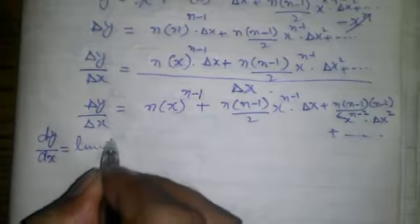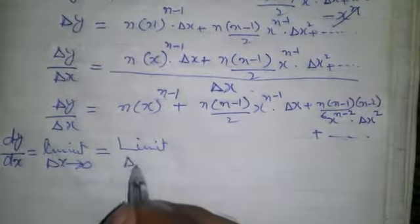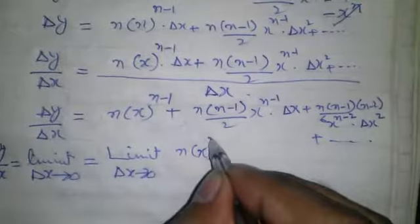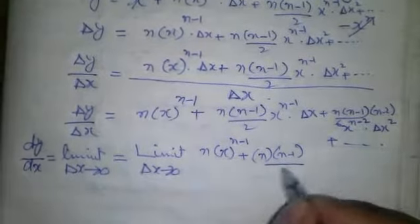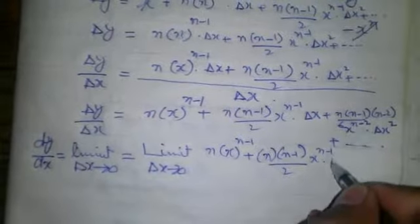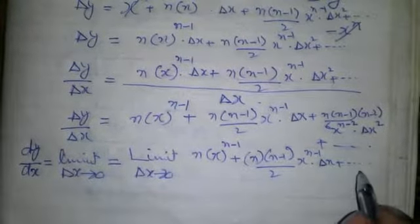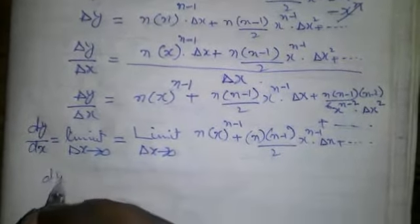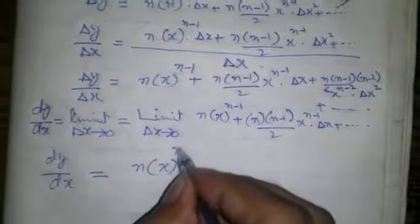So dy by dx is equal to the limit as delta x approaches 0. We have: n times x to the power n minus 1, plus n times x to the power n minus 1 times delta x, plus so on — terms having high power of delta x. Now applying the limit on both sides.